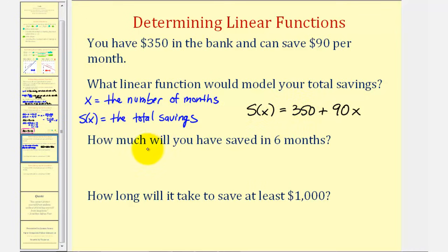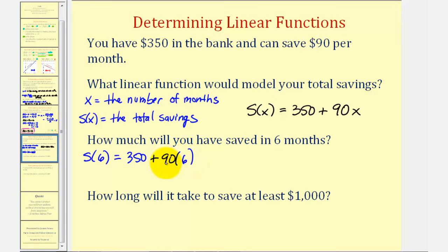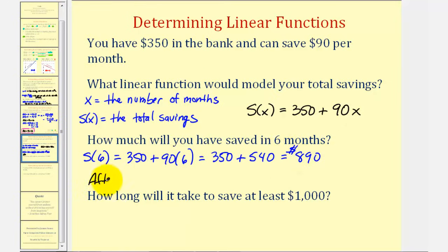How much will you have saved in 6 months? We want to find s(6). Starting with $350 plus $90 times 6: s(6) = 350 + 90(6) = 350 + 540 = 890. So after 6 months, you have saved $890.